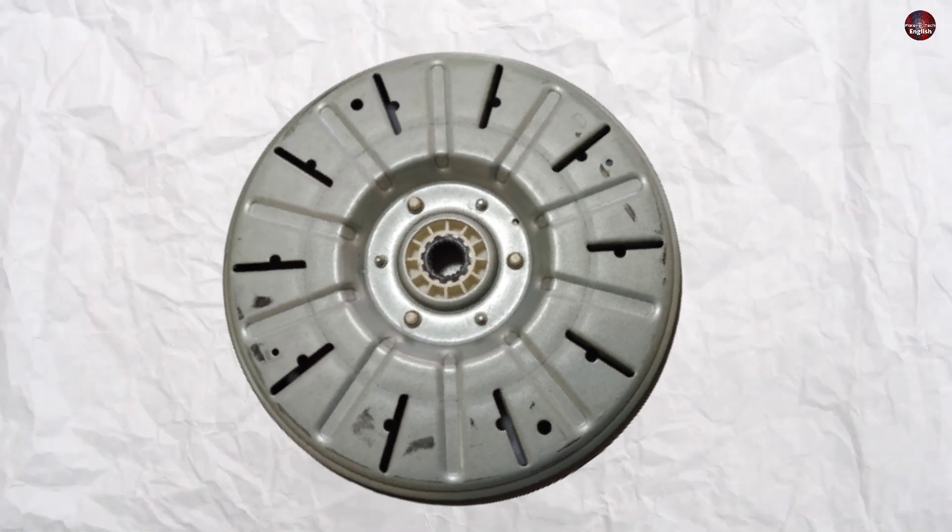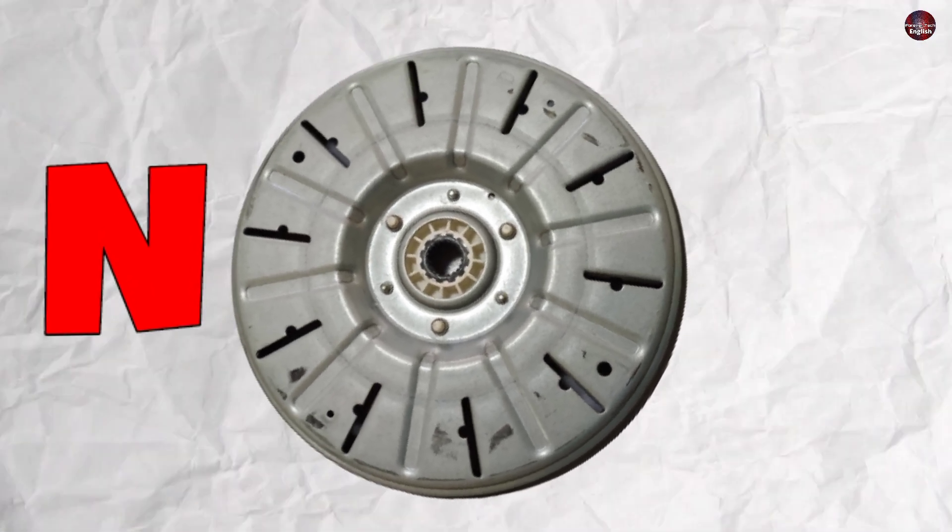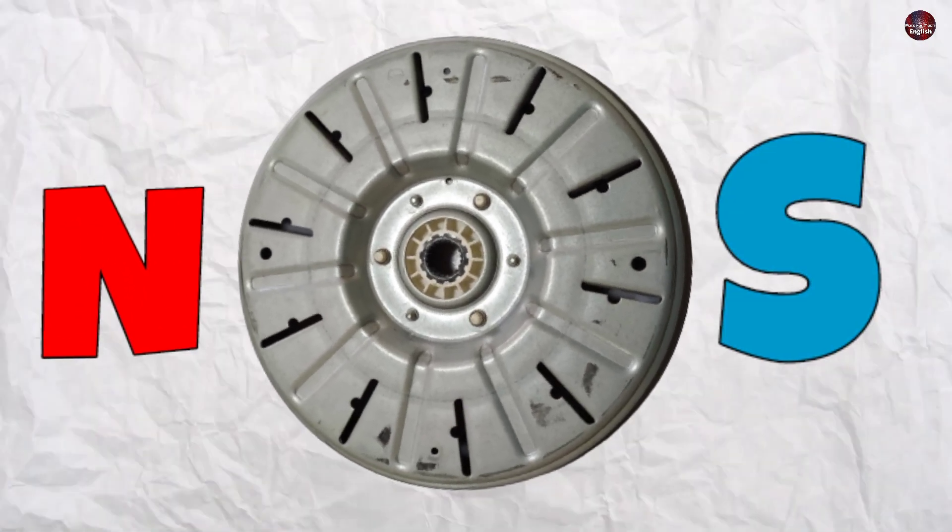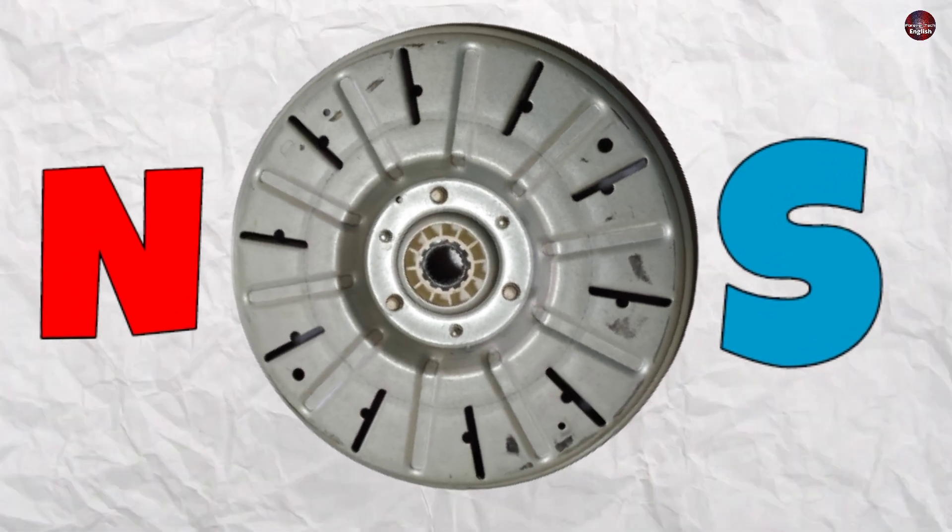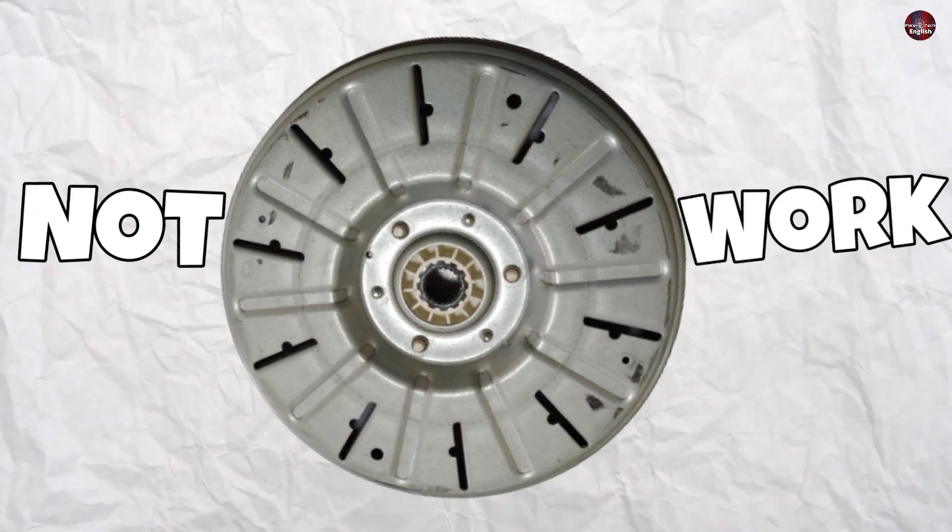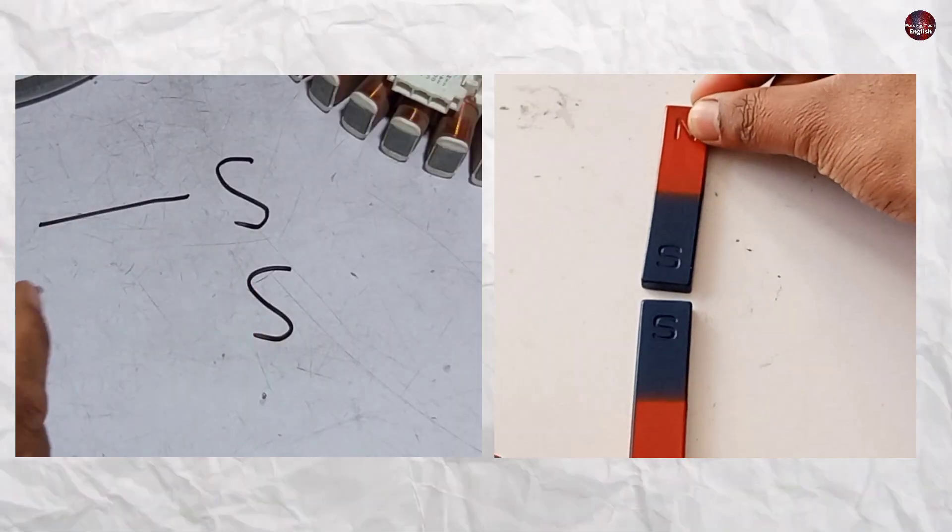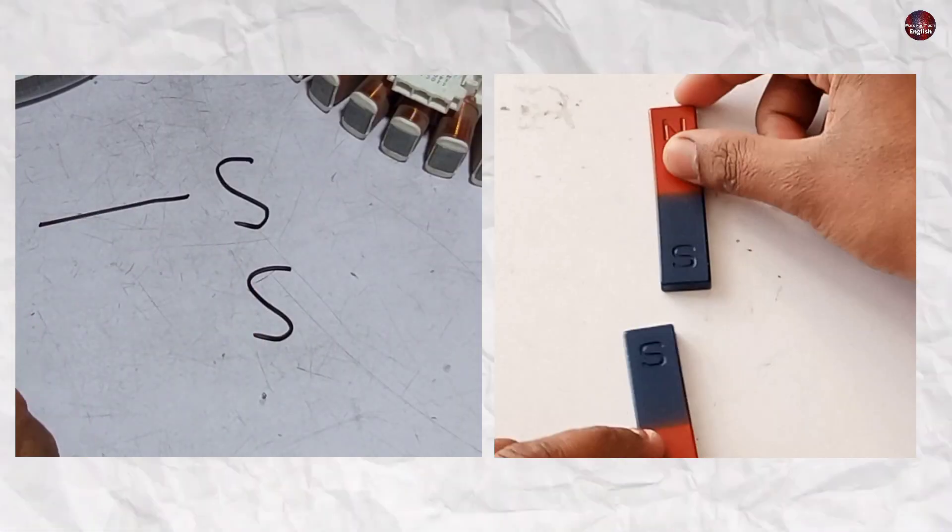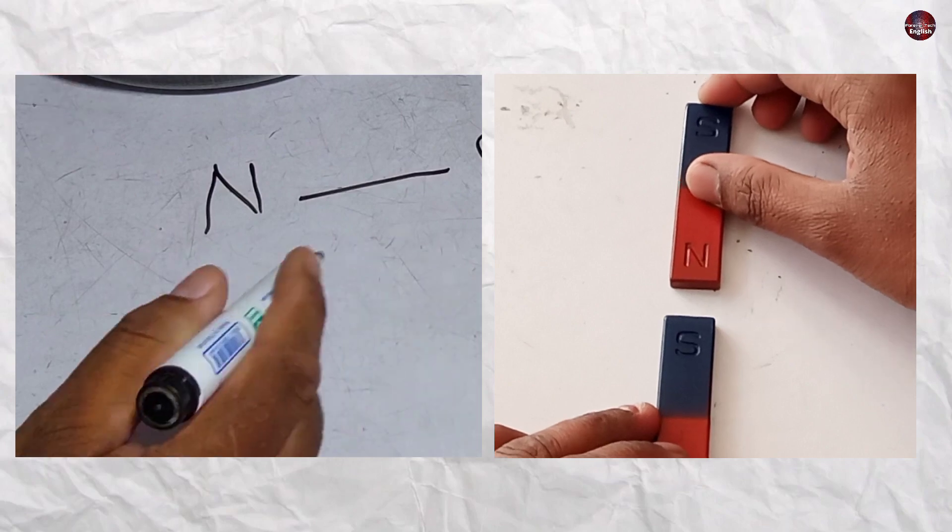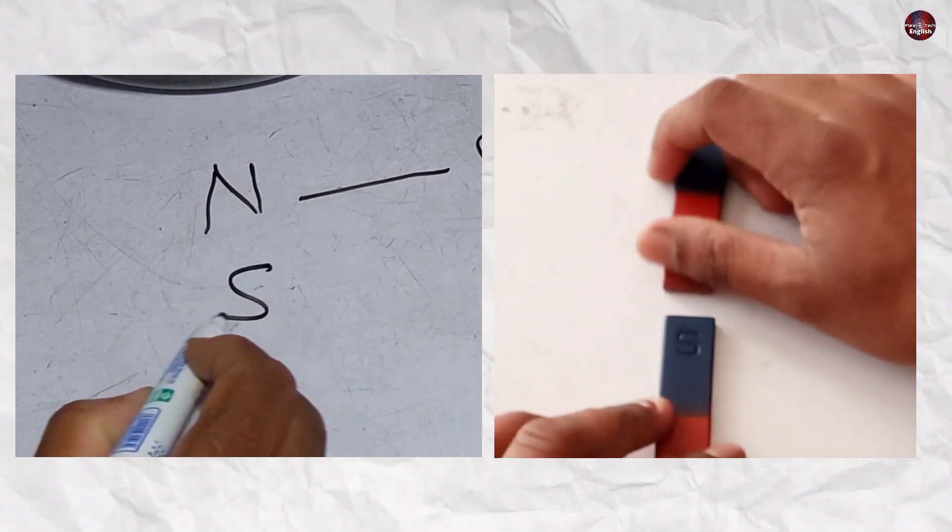Whenever any motor rotates, the north pole is made on one side of the motor, and the other side is the south pole. Then the motor works. Otherwise, it will not work. They will repel each other when the south pole is placed with the south pole. And when the south pole is placed with the north, they will attract each other.